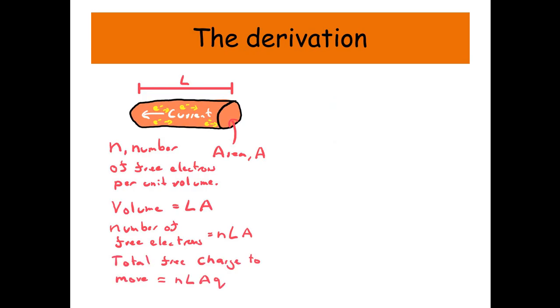So the total free charge that can move, so the big Q, or the capital Q from the previous slide, is going to equal the number of electrons times by the charge of one of our electrons. So that's N, L, A, Q. Little q, not big Q, for the total charge.